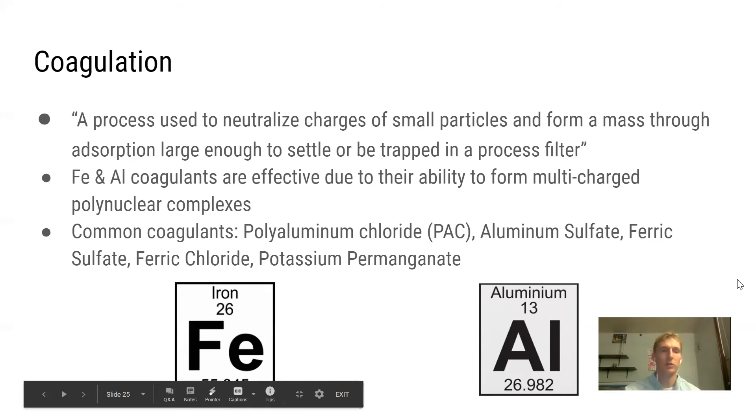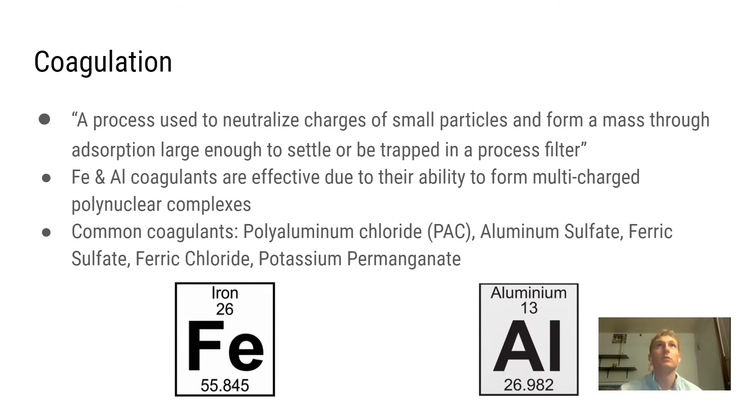We're going to be talking about the unit processes that we deemed for further consideration. The first one we're going to talk about is a process called coagulation. This is becoming increasingly more common in water treatment in modern day practices. By definition, coagulation is a chemical process used to neutralize charges of small particles and form a mass through adsorption large enough to settle or be trapped in a process filter. Basically what happens in coagulation is these added chemicals react with particles in the water and these particles form larger masses. Then these larger masses are able to be more easily separated from the water or filtered out. This is why iron and aluminum are very effective coagulants, from their ability to form these larger compounds, these polynuclear complexes.